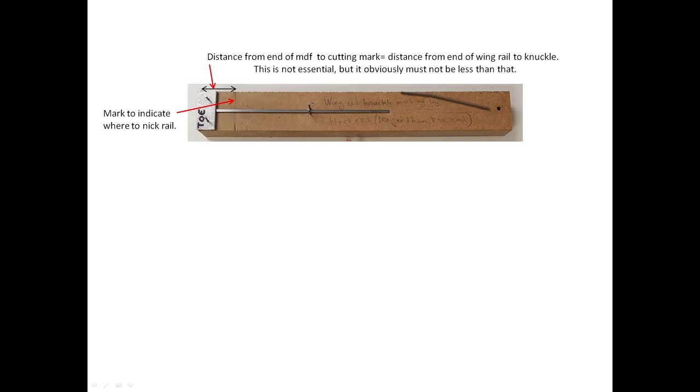In any case, the distance from the mark to the end of the block must obviously not be less than the distance from the end of the wing rail to the knuckle. Thirdly, when the rail is placed on the jig for producing the common crossing, the nick in the head of the rail makes it easier to see where the centre of the bend is located, which makes positioning the rail much easier.